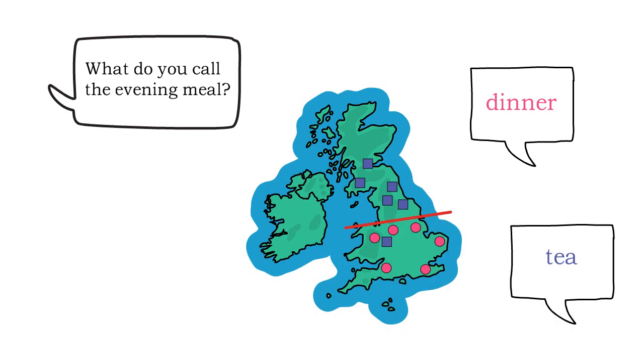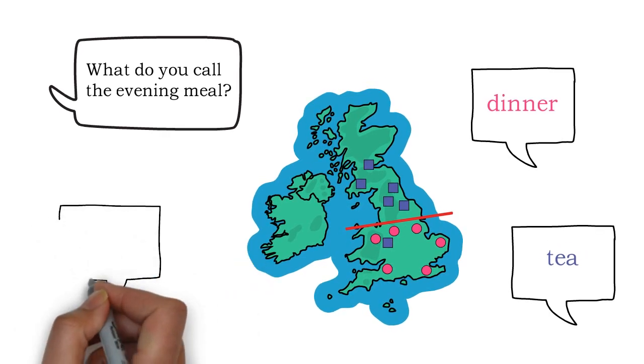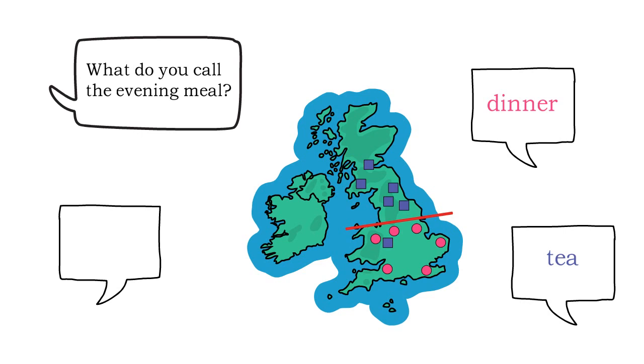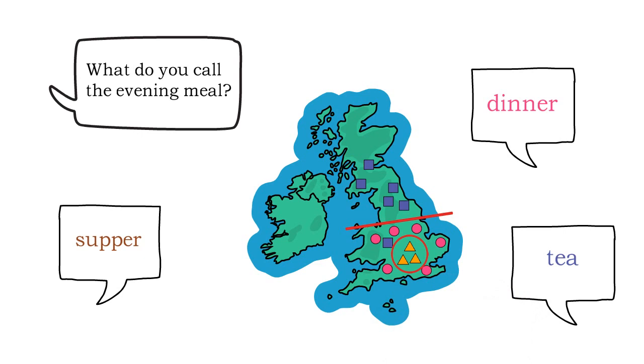Isoglosses are a line of best fit, showing the broad regional spread of linguistic features. A few people in your experiment also called the evening meal supper. In this case, we draw multiple isoglosses to separate each variant from each other and draw conclusions based on these broad areas.